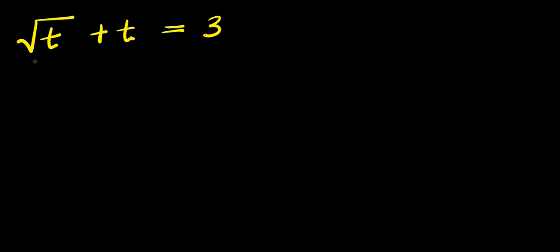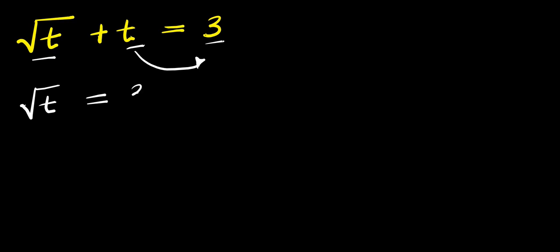Hello. How to solve √t + t = 3. We are solving for all values of t that satisfy this equation, so we can start by moving t over to the other side. We have √t = 3 - t.